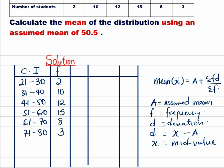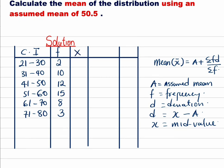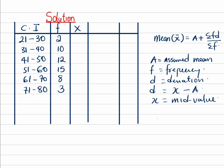Now the next thing we are going to do is to get our mid value x. In the previous video I told you to find x, you sum the upper and the lower class interval and divide by 2. So let me pick the first one: 21 plus 30, that is upper and lower class interval divided by 2. You are going to get 51 over 2 which is 25.5. The same thing you are going to do all through. This is going to be 35.5, then 45.5, 55.5, 65.5, and 75.5.